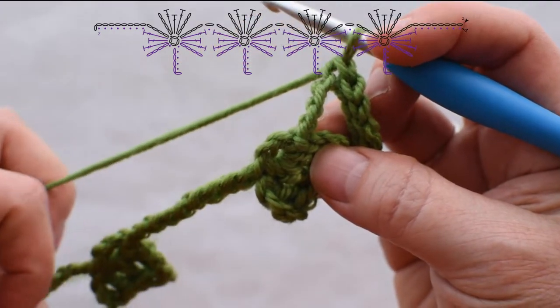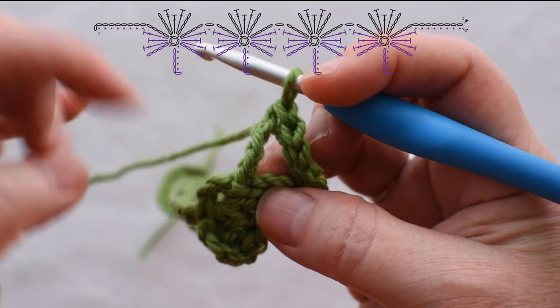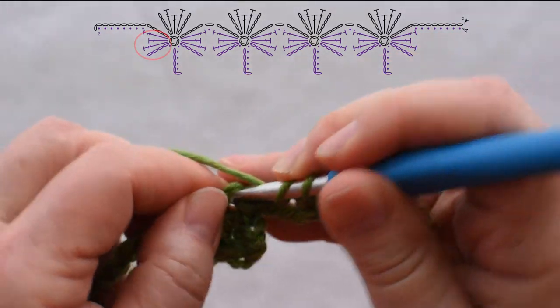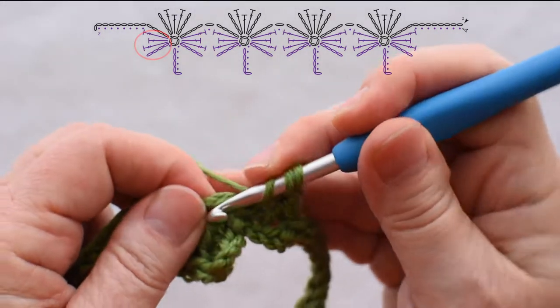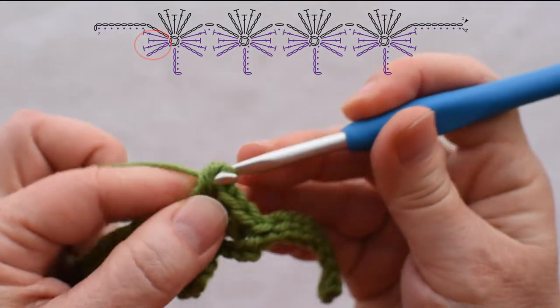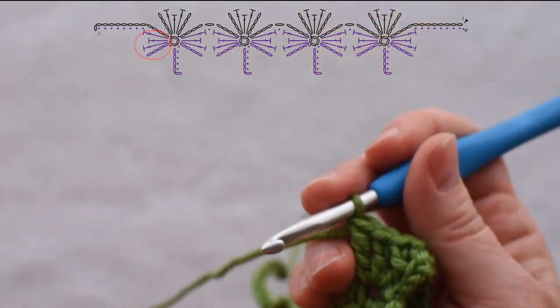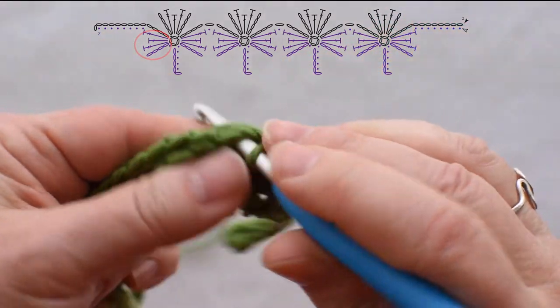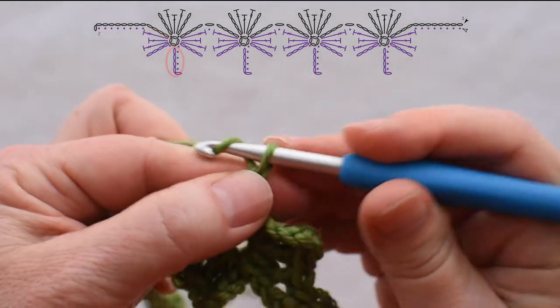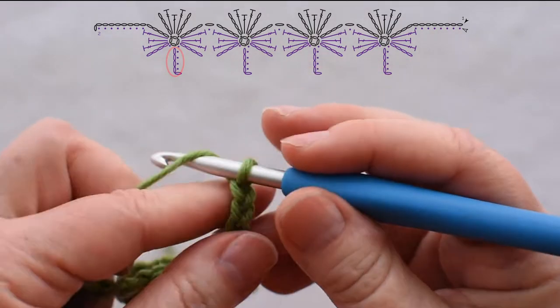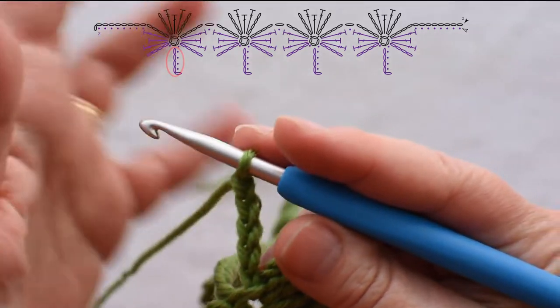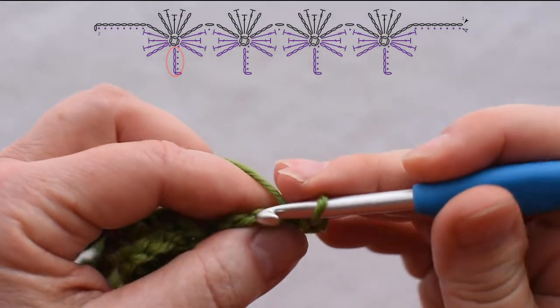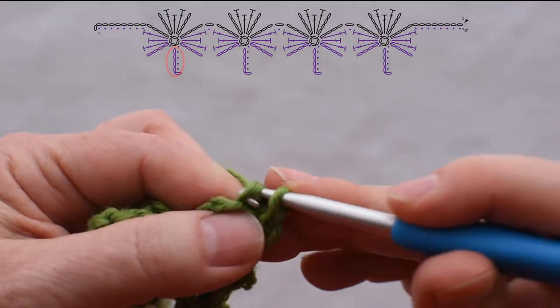Now I'm going to start working back along the shamrocks I've already begun and all the stitches will be worked right here into this ring. Then chain five and work into the back bump of the second chain from the hook and each chain.